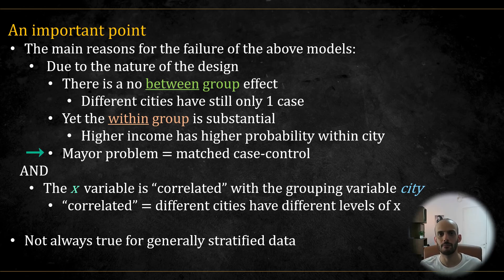Now, this city election example mirrors exactly the matched case control design because there too, the number of cases is predetermined. Typically, in a one-to-one matching, there will always be one case per group. And there is also another important reason, and it is that the predictor of interest, income, is correlated with the group variable, city. In other words, candidates in wealthier cities tend to have higher income. This correlation makes it even harder for marginal models to detect that there is an actual effect. If instead, income were widely distributed within cities, a marginal model might still be able to pick up the association. I want to stress this because these reasons - one, a fixed number of outcomes per group, and two, a strong correlation between the predictor and the group - are not necessarily true for general stratified data.